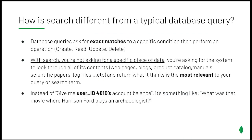So how exactly does full-text search differ from a standard database query? In a typical database query, we're looking for exact matches or performing targeted operations. With search, we're not being nearly as specific — we're looking for relative matches to keywords and terms that will be returned based on how highly they score as a match. So instead of returning user ID 4810's account data, it may be a Google search for a vague movie reference where all we can remember is the actor and the theme.